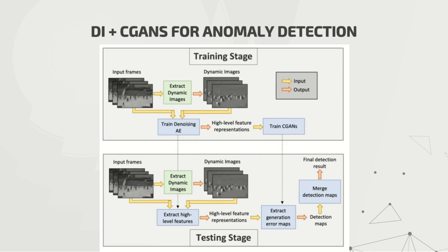This is a visualization of the presented framework, which has two stages: the training stage and the testing stage. In the training stage, I start by extracting dynamic image representations for all frames of the training data, then denoising autoencoders are trained to extract high-level features, and then conditional GANs are trained to translate between the extracted features and the corresponding frame. In the testing stage, dynamic image representations of test frames are extracted, high-level features are extracted using the pre-trained denoising autoencoder, single-level detection maps are calculated using the pre-trained CGAN, the semantic difference is computed, and finally detection maps are combined to produce a final detection result indicating whether an anomaly is present.